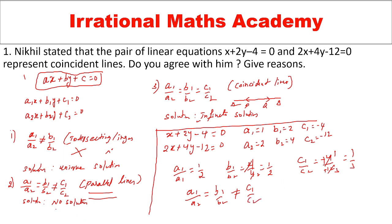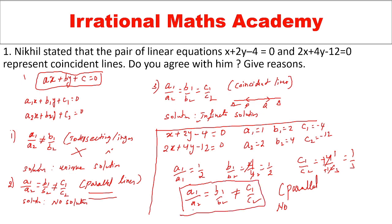So which type of lines are these? These lines are parallel lines. Do you agree with Nikhil? No, because those are not coincident lines. The condition a1/a2 = b1/b2 ≠ c1/c2 gives parallel lines — that is the reason I do not agree with Nikhil.